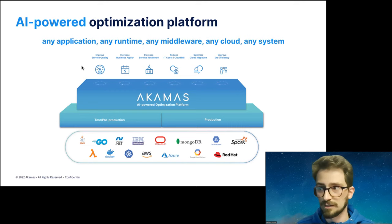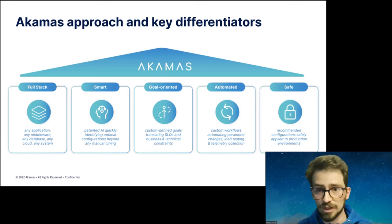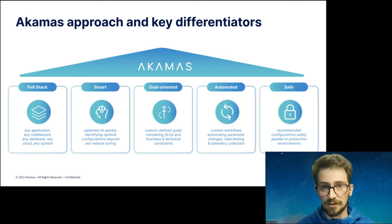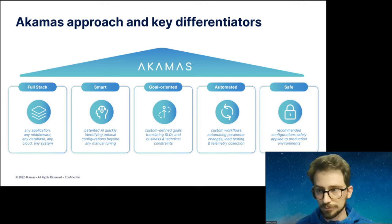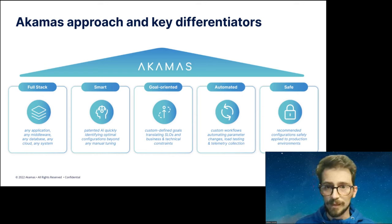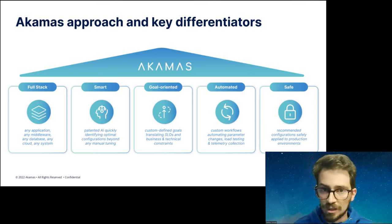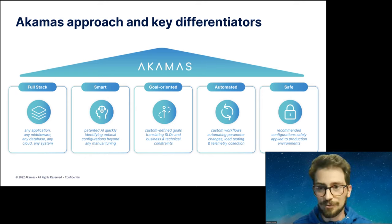Akamas has some key capabilities that differentiate it from other autotuners. The most important is that it is a full-stack autotuner — it can simultaneously tune different layers of the stack. We are also technology-agnostic, aiming to be as versatile as possible without being constrained by any specific technology or platform. Tuning different layers is not only important for extracting more performance, but also for taking advantage of interdependencies between layers. For example, if you select a larger machine with more memory, you can allocate more memory to the database.